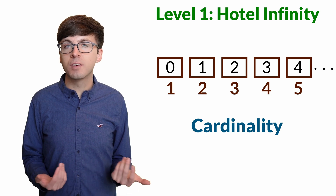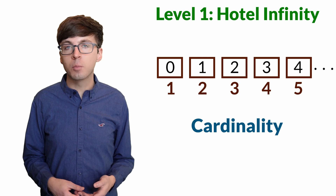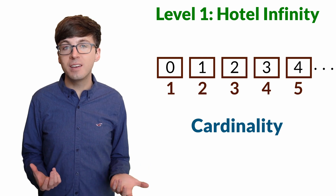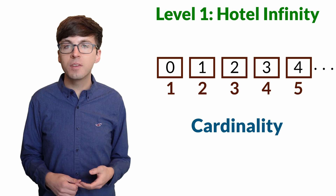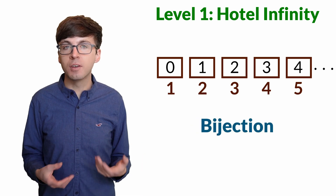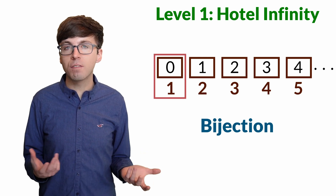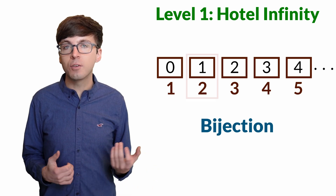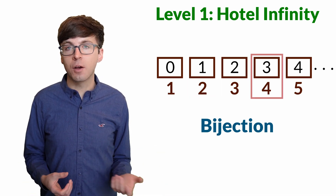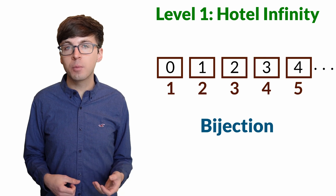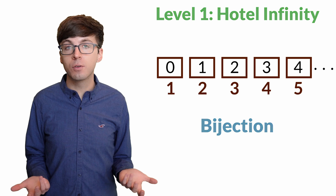Cardinality is a way of measuring the size of a set. Although the second set includes the number zero, both sets fit in exactly the same number of rooms. Another way to explain this is to say that there's a bijection between these two sets — a way to pair off the values so that every number in each set is paired with exactly one number from the other. The natural numbers have the same cardinality whether or not we include zero.